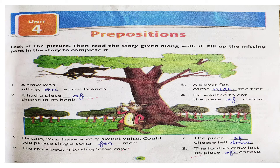He said, you have a very sweet voice. Could you please sing a song for me? The crow began to sing — caw, caw. The piece of cheese fell down. The foolish crow lost its piece of cheese. So dear children, yeh jitne bhi humne blanks bharé hain, they all are prepositions.